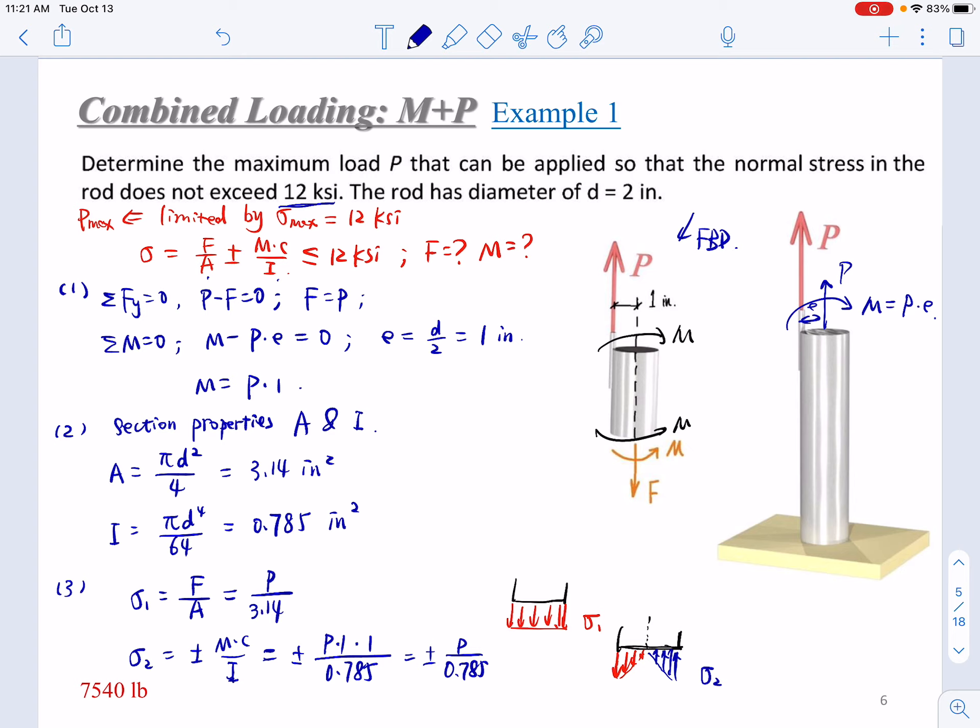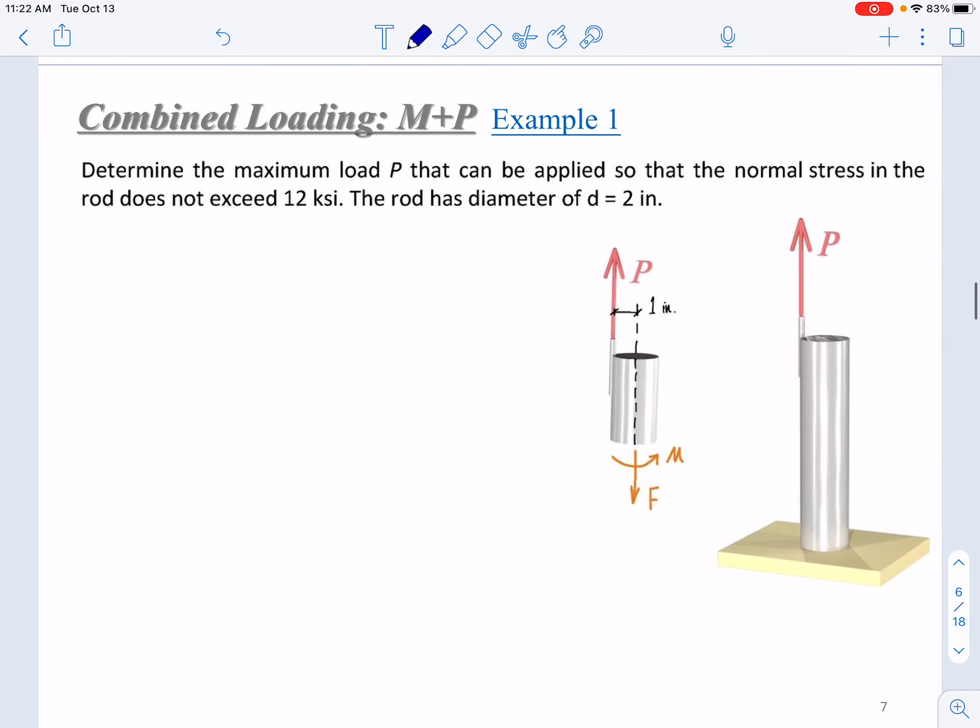Now, where you will have the maximum stress? According to superposition, on the left edge, you will have positive plus positive. That will be enlarged positive stress, tensile stress. On the right end, you will have sigma 1 minus sigma 2, and it will be one positive, one negative, so the magnitude value will be smaller. So the maximum stress will be on the left corner, on the left edge.